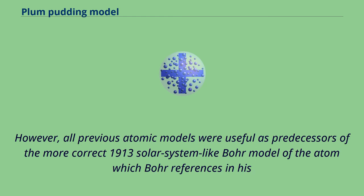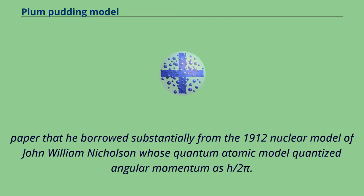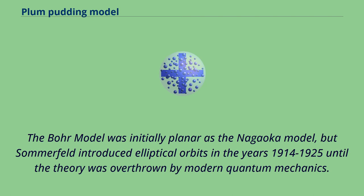However, all previous atomic models were useful as predecessors of the more correct 1913 solar system-like Bohr model of the atom, which Bohr references in his paper, borrowing substantially from the 1912 nuclear model of John William Nicholson, whose quantum atomic model quantized angular momentum as h/2π. The Bohr model was initially planar like the Nagaoka model, but Sommerfeld introduced elliptical orbits in the years 1914 to 1925, until the theory was overthrown by modern quantum mechanics.